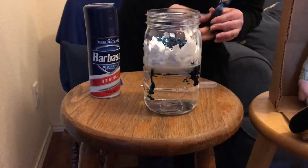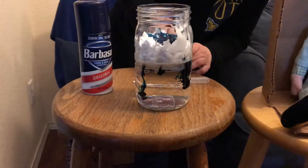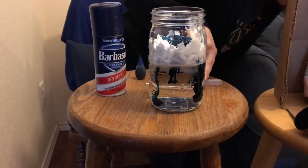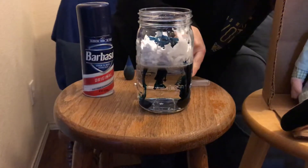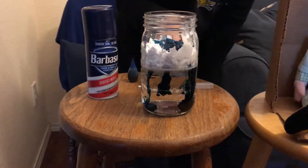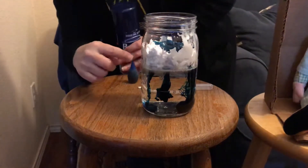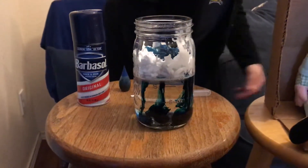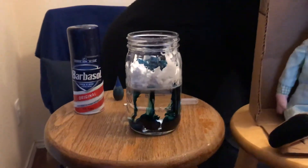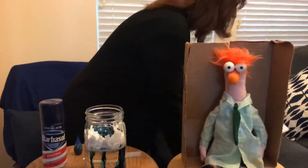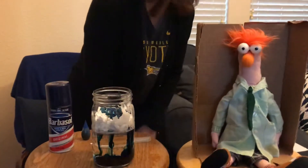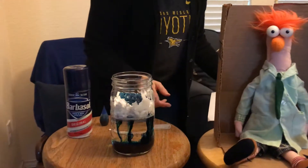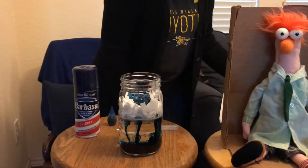Do you see what is happening? Look — it's raining! The rain is coming down from the clouds. Look at all that rain coming down out of the clouds! This is called the rain cloud in a jar experiment.